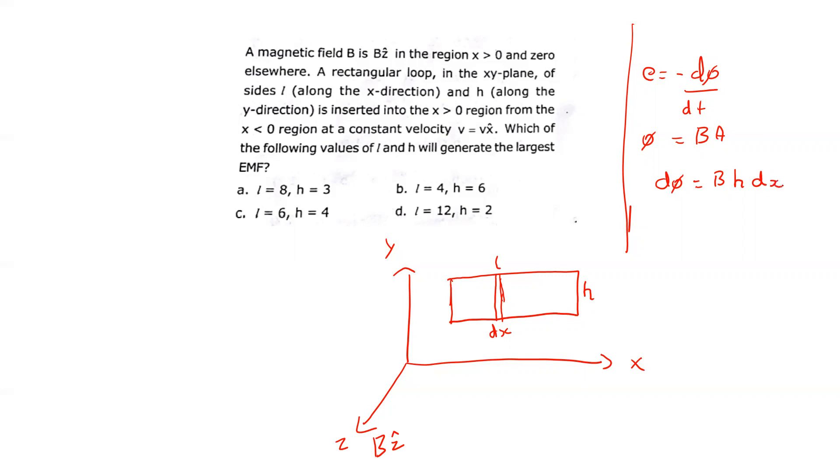Substituting into our equation, EMF = -dΦ/dt = -BH·dx/dt. Since dx/dt is velocity, EMF = -BHV.